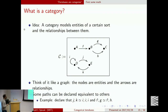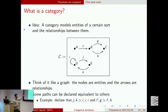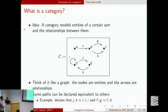Let me say what a category is. This isn't the usual definition, but it's equivalent. A category models entities of a certain sort and relationships between them. Here's a picture: this category has five objects, A, B, C, D, E, and lots of arrows, F, G, H, I, J, K. You can think of this as a graph — in fact, you can think of any category as a graph.